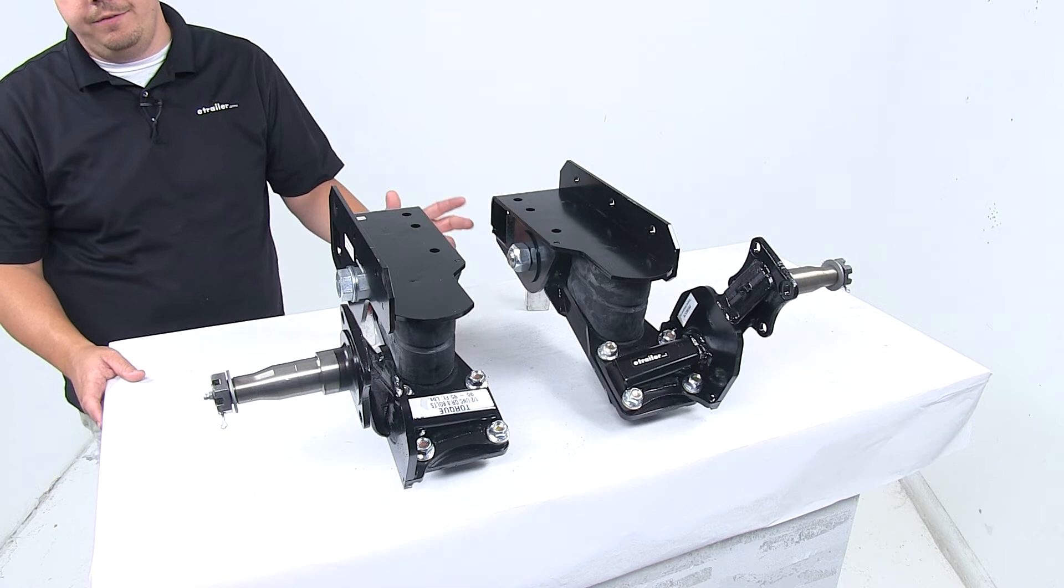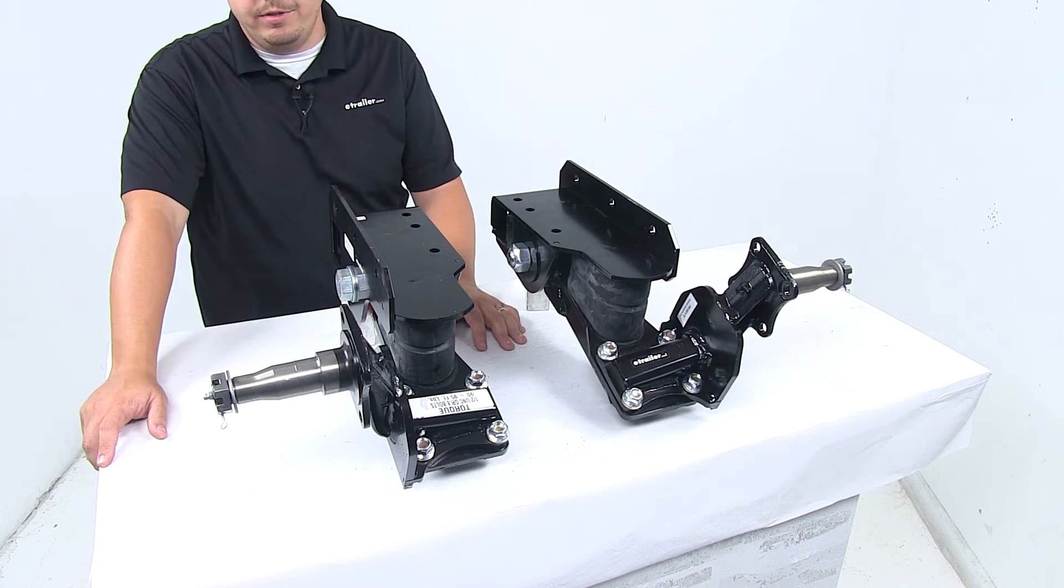It reduces roll during cornering, and it's designed to fit any trailer width. The built-in camber and toe-in help your trailer to track straight, reducing wear on the tires.